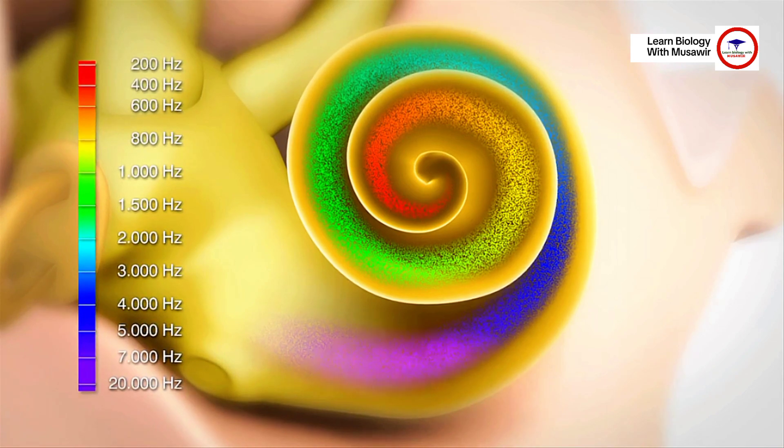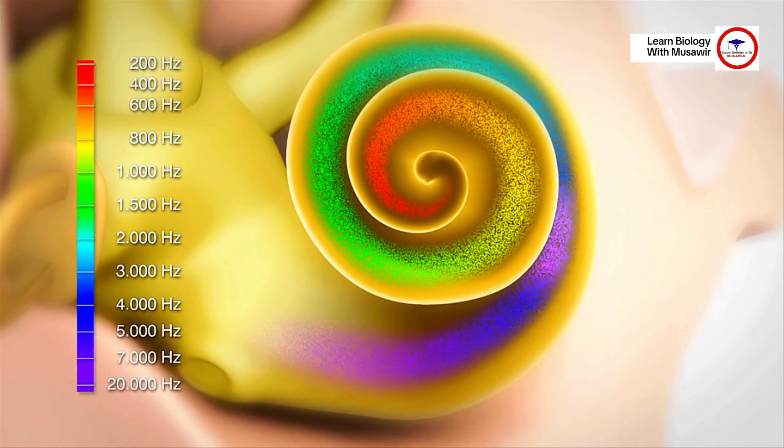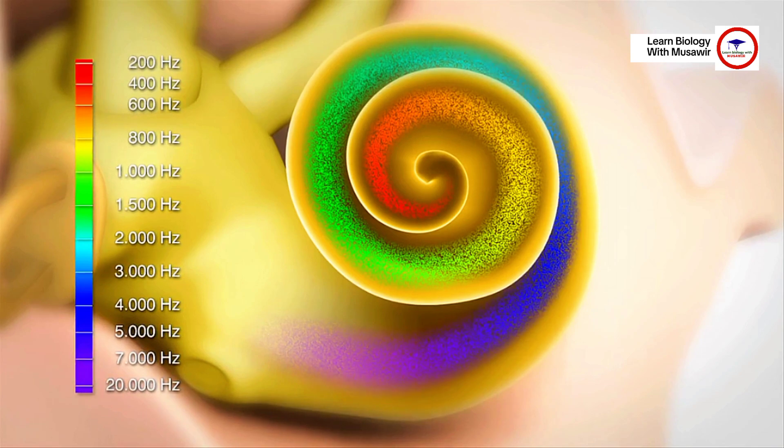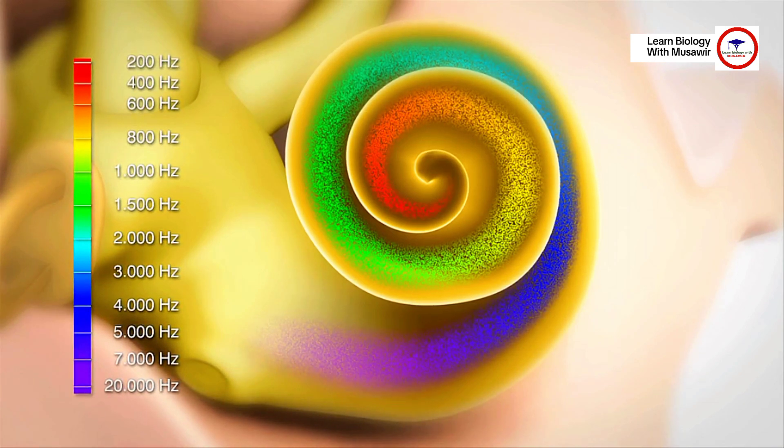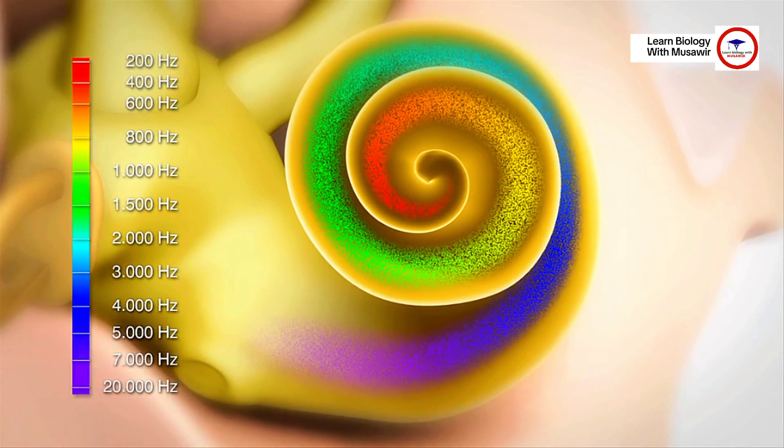Hair cells located at the base or lower region of the cochlea are responsible for high frequency, while hair cells at the apex are responsible for the low frequencies.